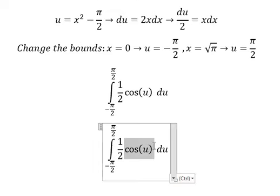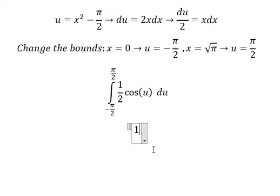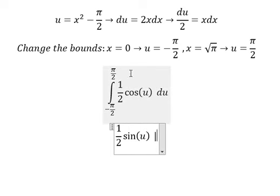The integration of cosine u is sine u, and we put the bounds from negative π over 2 to positive π over 2.